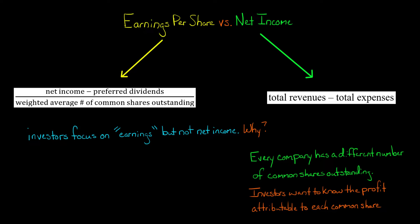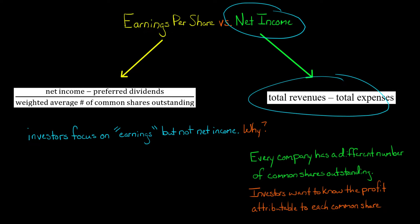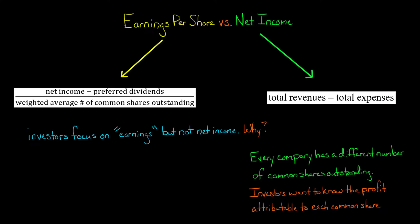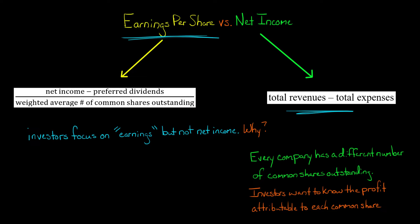You might have wondered why investors focus so much on a company's earnings per share, but not on its net income. After all, net income appears on the income statement, it's very easy to calculate, and it's a direct measure of the company's profit. So why is it that investors focus on this more complicated calculation and fixate on this earnings per share figure?